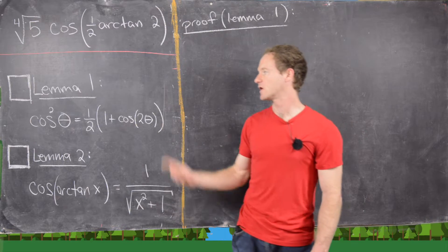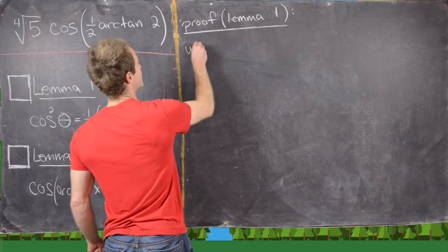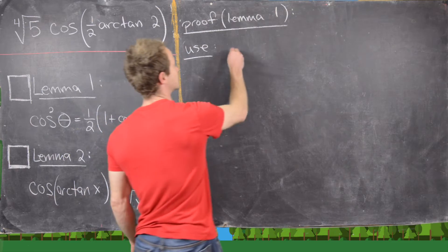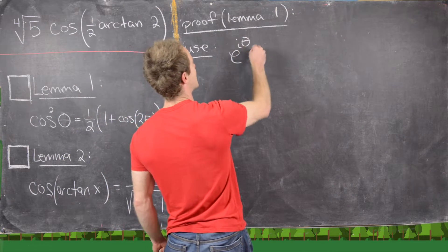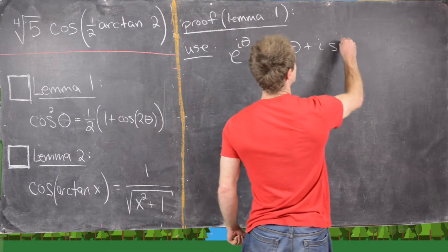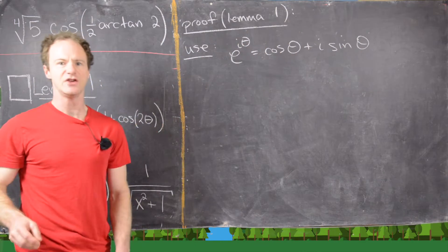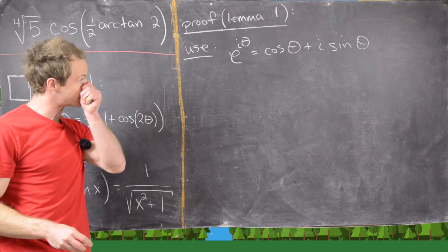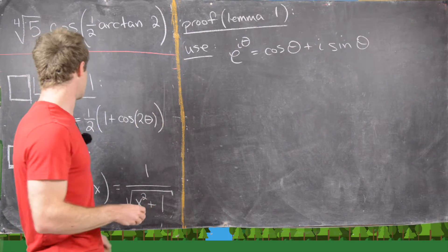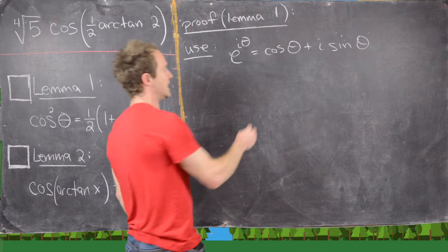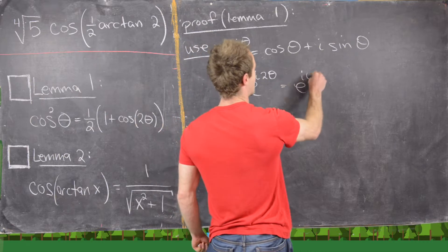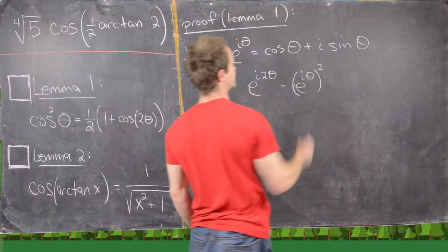Let's go ahead and look at the proof of Lemma 1. For the proof of Lemma 1, we're going to use Euler's formula, which says that e to the iθ equals cosine of θ plus i times sine of θ. You can get that by looking at power series, or there are a couple of other ways to get this identity. Now what we want to do is look at e to the i2θ and e to the iθ quantity squared.